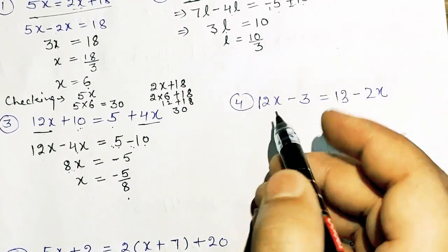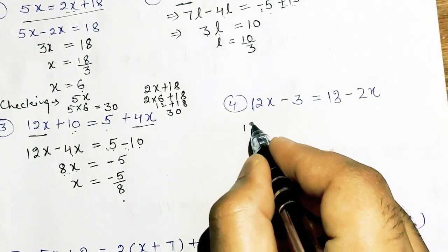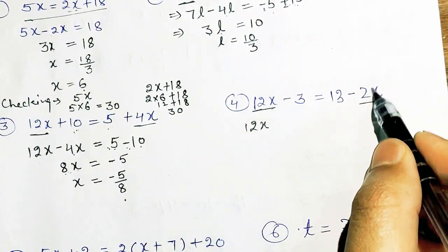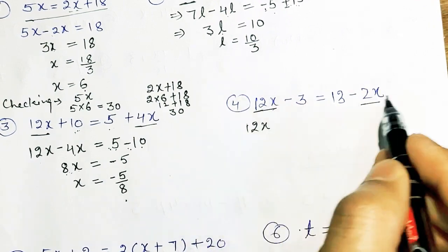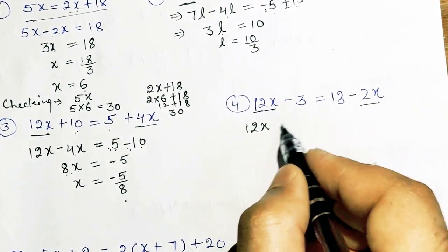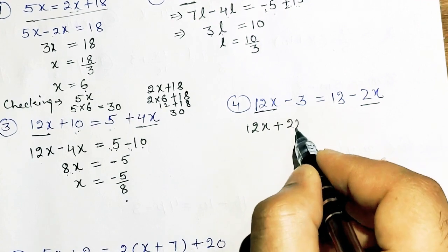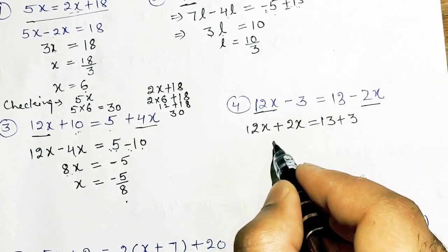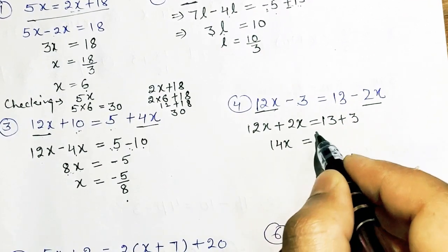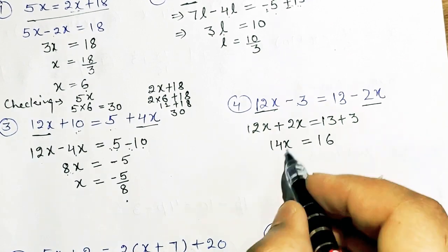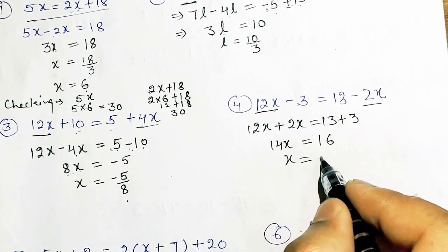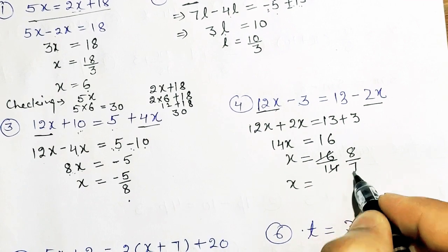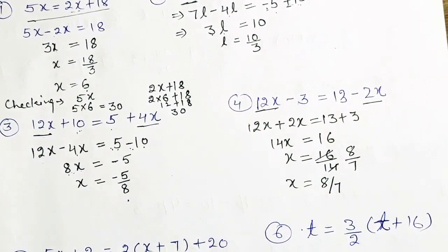Fourth part: 12x and 2x both have x as the same variable with the same power, so these are like terms. 12x plus 2x equals 14x. 13 minus 3 moves to the RHS as plus 3, giving 14x equals 16. So x equals 16 upon 14. You can cancel to get x equals 8 upon 7.